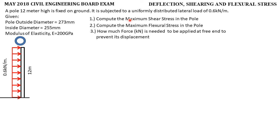For numbers one and two, we need to compute the maximum shear and maximum flexural stress. The primary thing we need first is to compute the maximum shear and moment due to this load. Let's draw the shear and moment diagram. From this setup, the reaction is only at the fixed end. The value of the reaction is equal to 0.6 kN per meter multiplied by 12. The other reaction is the moment reaction, since due to this load, the tendency is to rotate clockwise, so the moment reaction acts counter-clockwise.